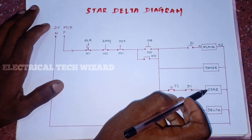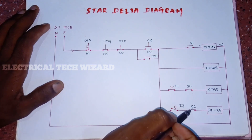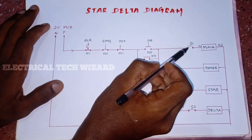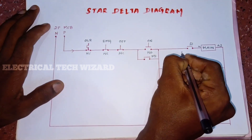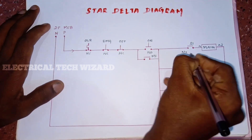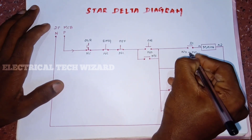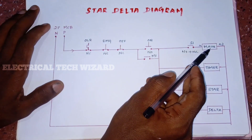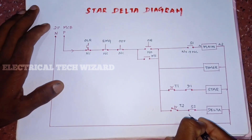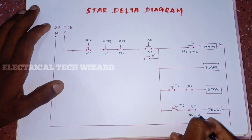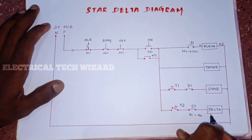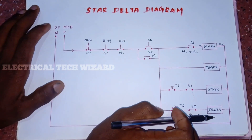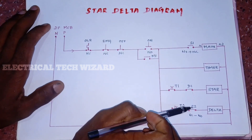The star contactor will connect the A1 cable. S2 is NO and S1 is NO. The timer will connect the A1 cable. S1 is NO. The A1 is the main contactor and A2 is neutral. The main contactor A1 is closed and the main controller is closed.